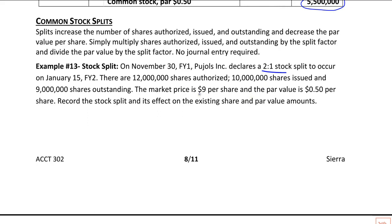It will also impact the market price per share, however it isn't a purely mathematical effect. So if the market price was originally $9, it would be in the neighborhood of $4.50, but the market values whatever it wants to value. Research has found that when companies split, the market interprets it as management being optimistic about future earnings growth. So instead of $4.50, it might be $4.51 or $4.52. But we are going to affect par value, shares authorized, shares issued, shares outstanding, and shares in Treasury as well.